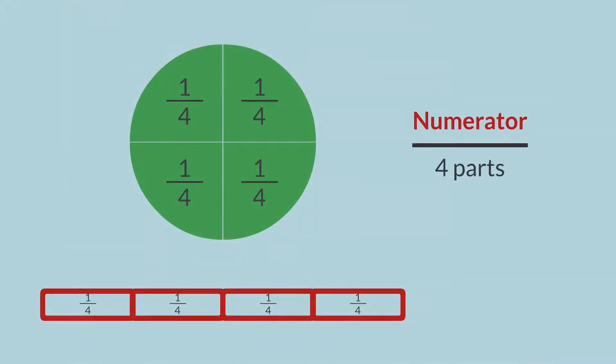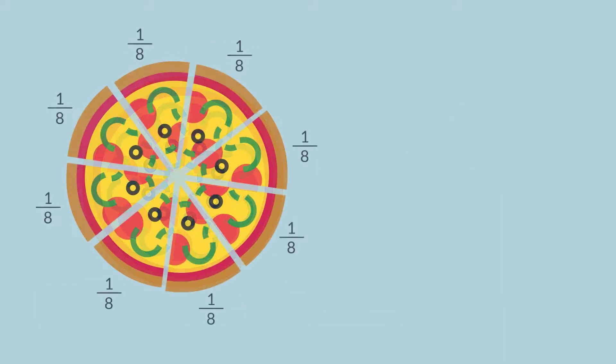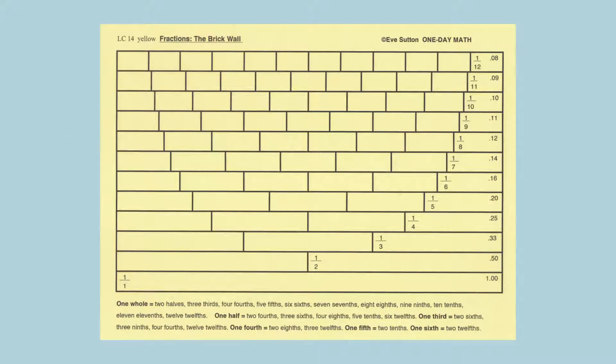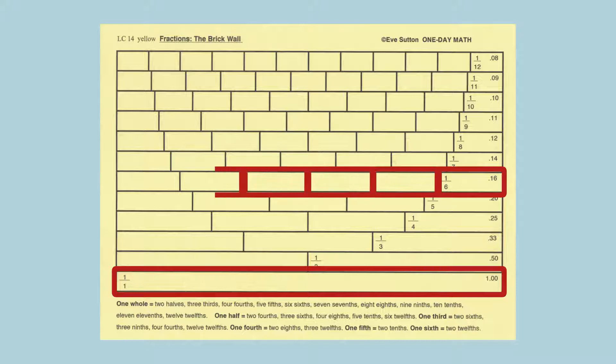The numerator shows how many of these pieces are being counted. If one pizza is cut into eight equal slices, you will have eight-eighths. You can see the same thing on the brick wall. One long brick at the bottom can reach all the way from the right side to the left side. But if the brick is cut into fractions, it will take several of these smaller bricks to cover the same distance.